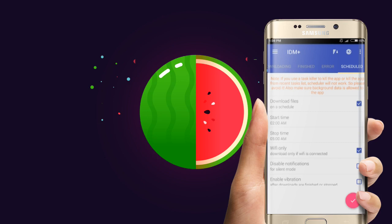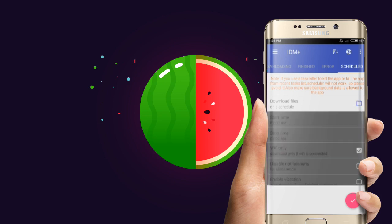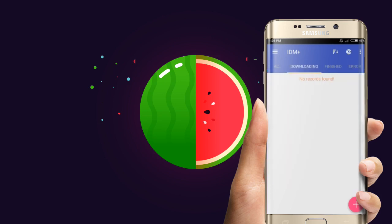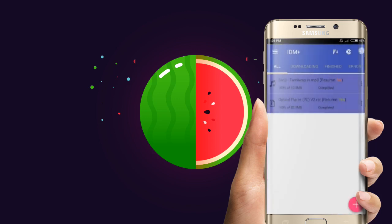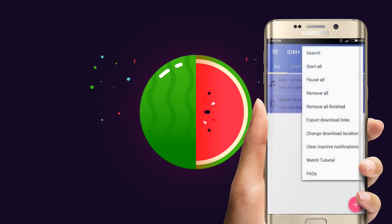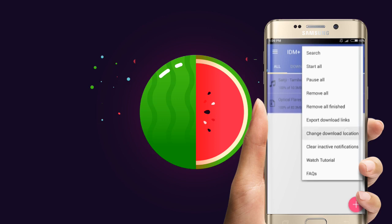If you want to use a download schedule, you can use a stop time for 5 minutes. There is a download schedule option. If you want to use internet storage, you can use a change download location.